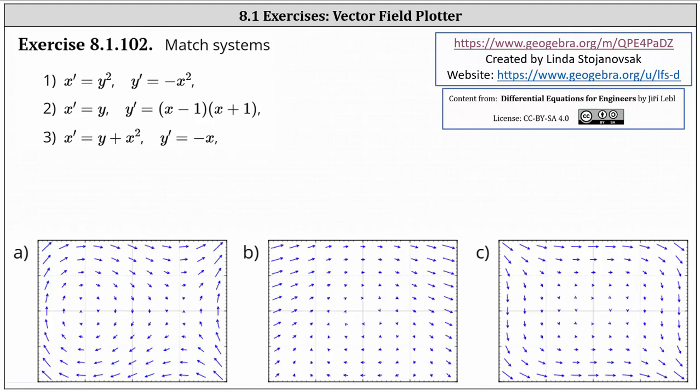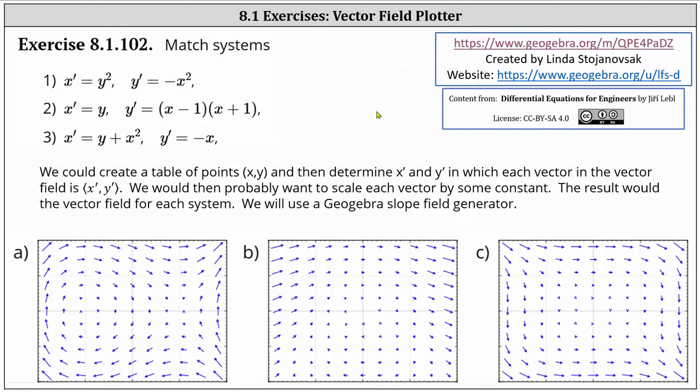We're asked to match the systems of differential equations to the correct slope field below. We could create a table of points (x, y), then determine x prime and y prime using the equations in which each vector in the vector field has components (x prime, y prime). We would then probably need to scale each vector by some constant. The result would be the slope fields for each system.